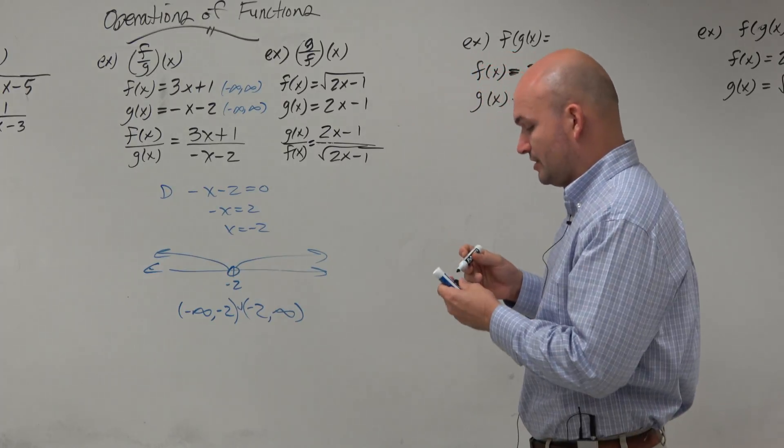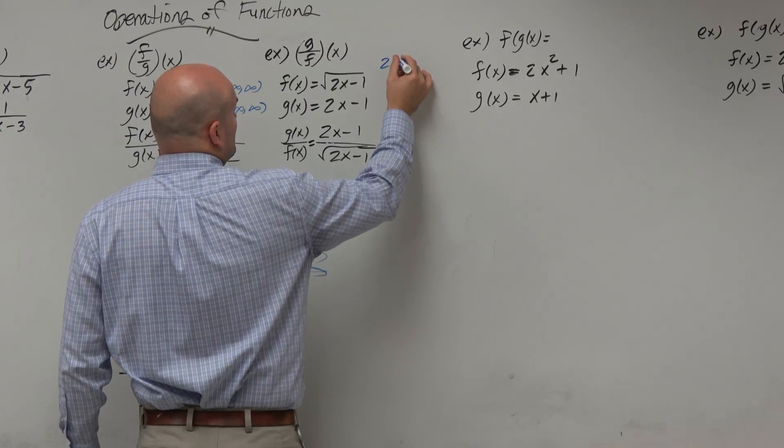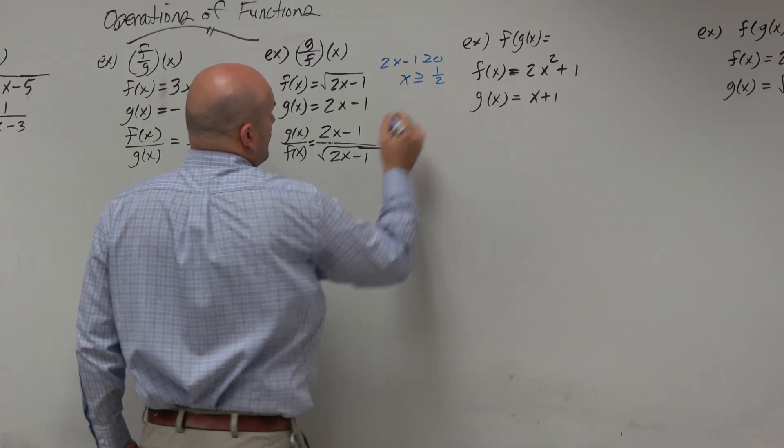So let's see. Let's figure out the domain of that. So again, the domain of f of x is going to be all numbers 2x minus 1 which is greater than or equal to 0. So therefore, x has to be greater than or equal to 1 half.